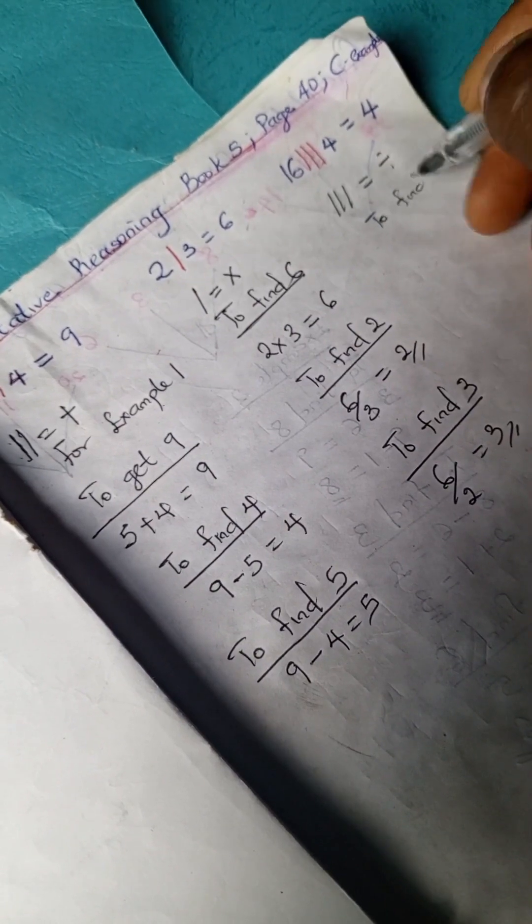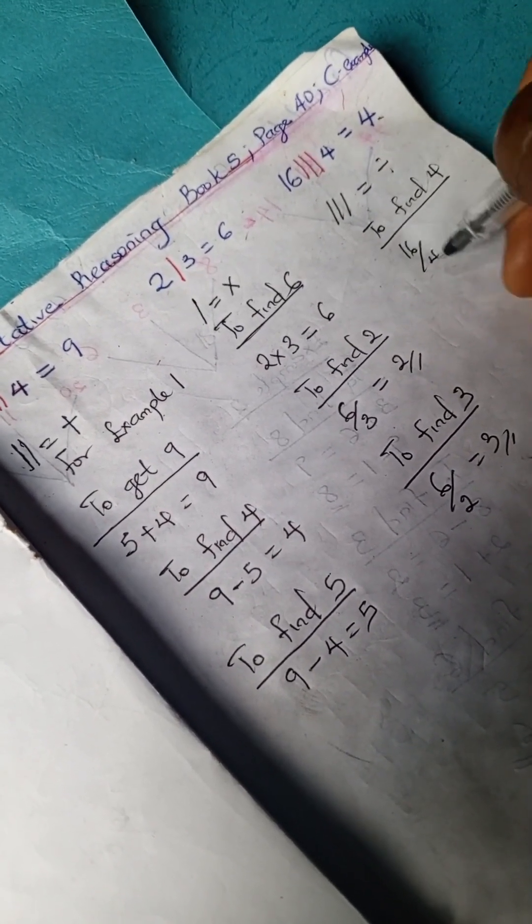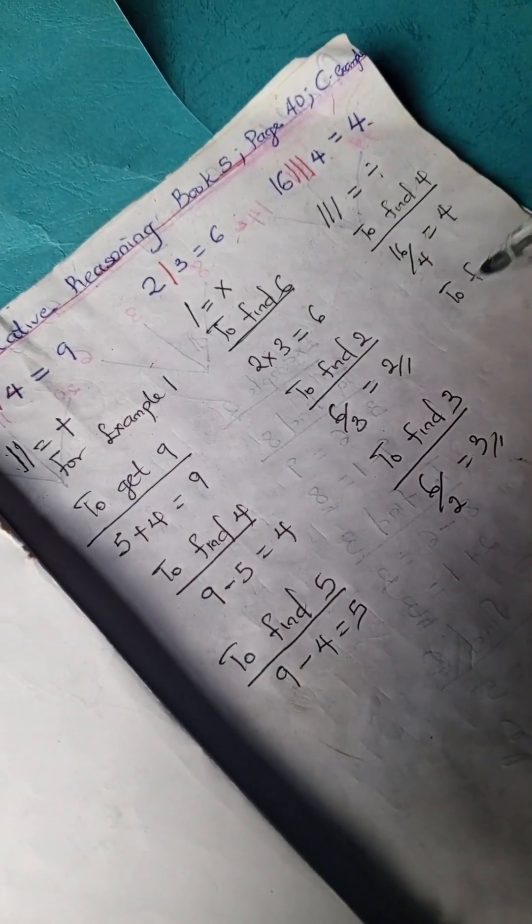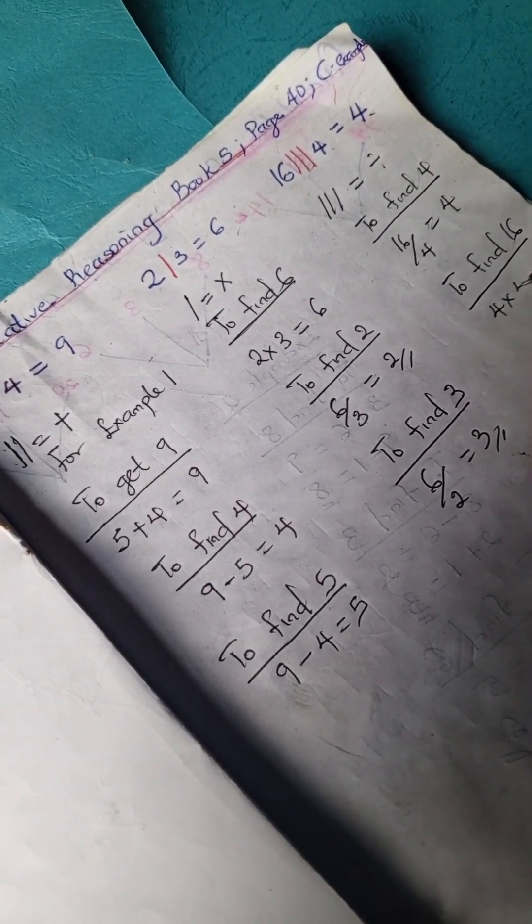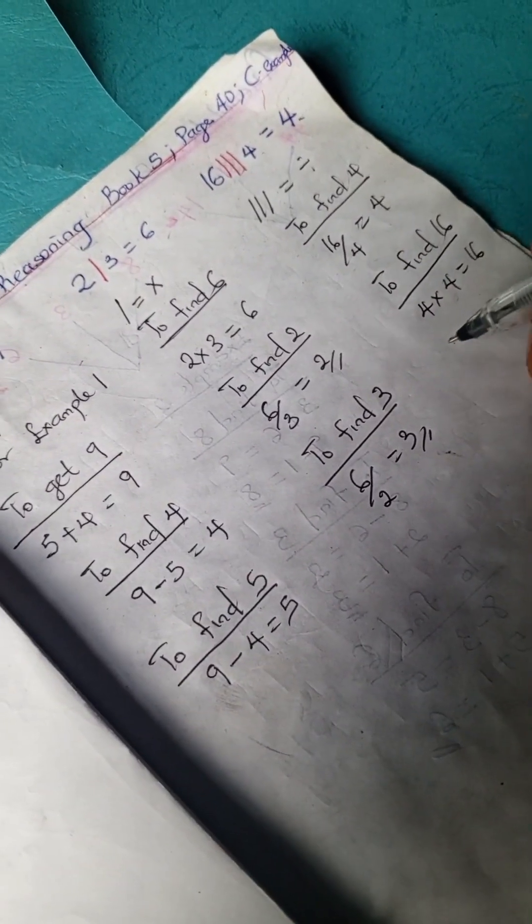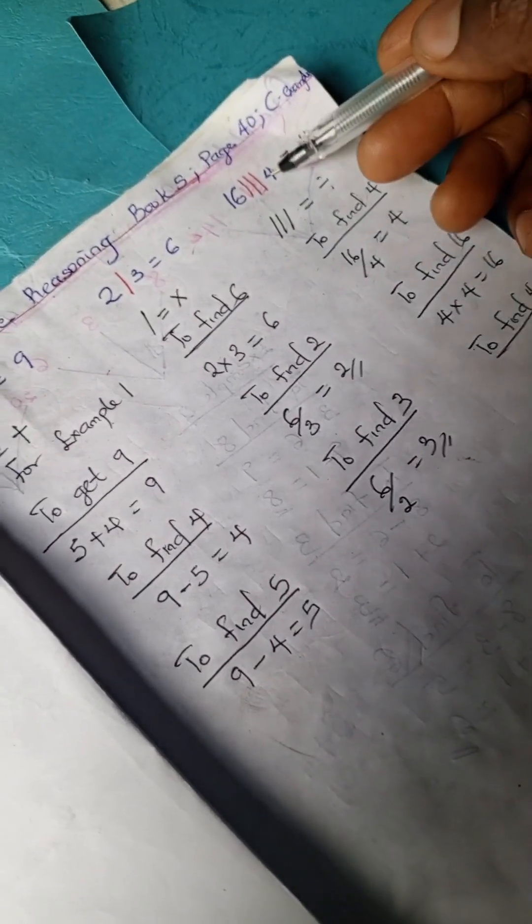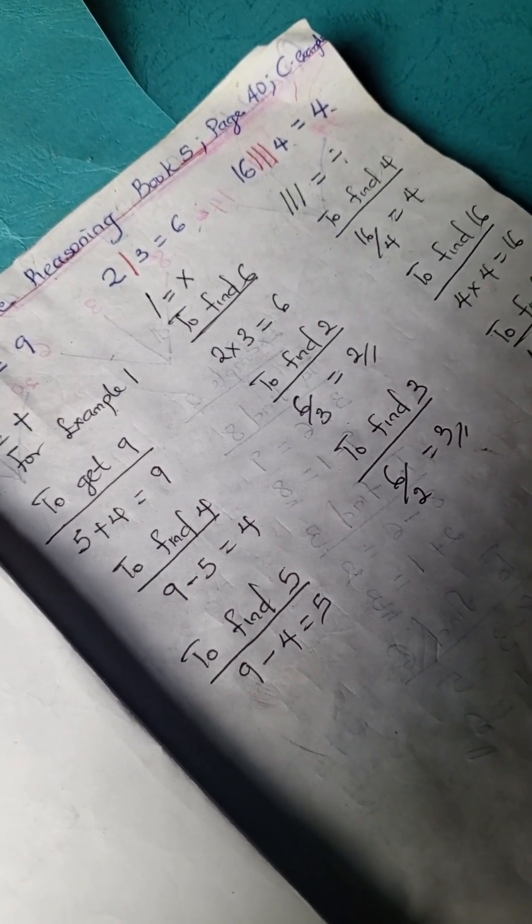To find 4, we have 16 divided by 4 equals 4. To find 16, we'll have 4 times 4 is 16. And to find this 4, we would have 16 divided by 4 is 4.